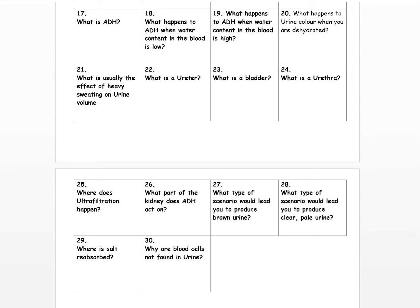Question twenty-nine: where is salt reabsorbed? Loop of Henle, a little bit in the collecting duct, a little bit in the distal convoluted tubule. Question thirty: why are blood cells not found in urine? They are too big — they cannot fit through the glomerulus into the Bowman's capsule. It doesn't mean it never happens, but if it does, it's a sign that something is going badly wrong in the kidney, so you go and see a doctor if you have blood in your urine.